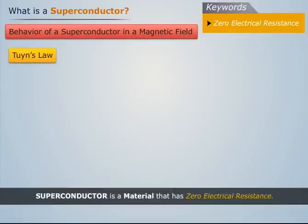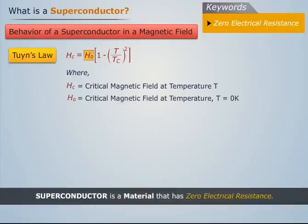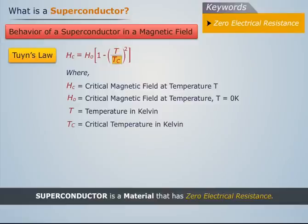It is given by Tuyn's law, which is Hc = H0[1-(T/Tc)²], where Hc is the critical magnetic field at temperature T, H0 is the critical magnetic field at a temperature of zero Kelvin, T the temperature in Kelvin, and Tc is the critical temperature in Kelvin.